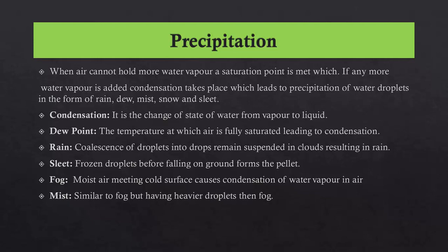What is rain? The coalescence of droplets into drops that remain suspended in clouds results in rain. What is sleet? Frozen droplets before falling on the ground form pellets, which are known as sleet. What is fog? Moist air meeting a cold surface causes condensation of water vapor in the air. What is mist? Mist is similar to fog but has heavier droplets.